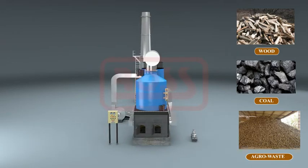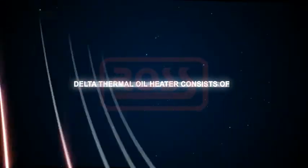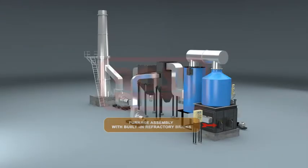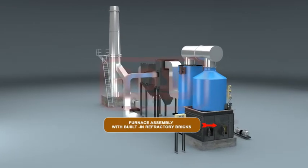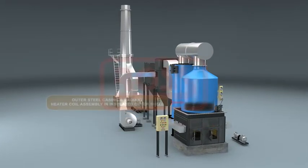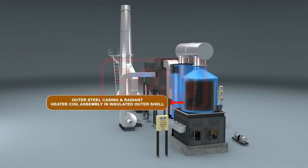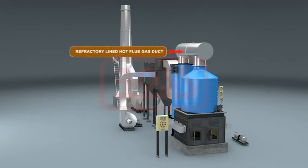The Delta Thermal Oil Heater consists of furnace assembly with built-in refractory bricks, outer steel casing and radiant heater coil assembly in insulated outer shell, refractory lined,